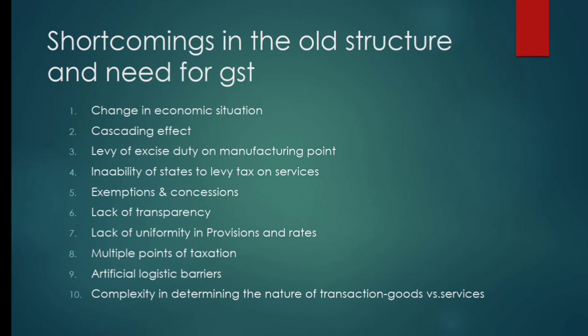The seventh shortcoming is lack of uniformity in provisions and rates. A single uniform rate was not applicable; different states had different provisions, and the center had separate provisions — due to which the need for GST was felt.